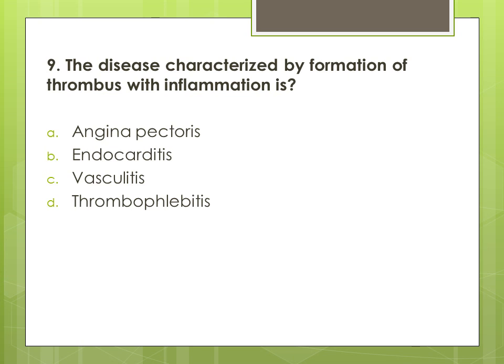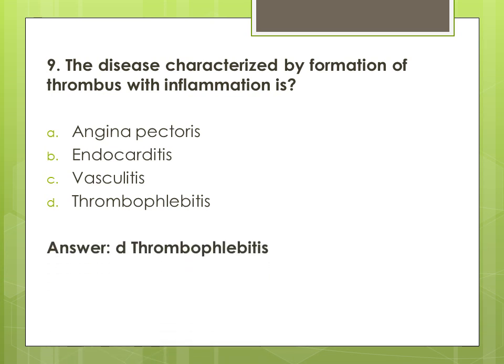Question 9: The disease characterized by formation of thrombus with inflammation is — options are: A. angina pectoris, B. endocarditis, C. vasculitis, and D. thrombophlebitis. The correct answer is D. thrombophlebitis.